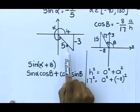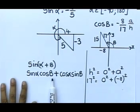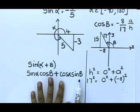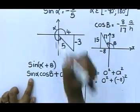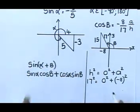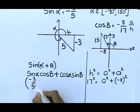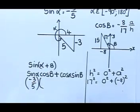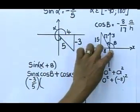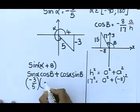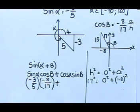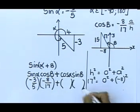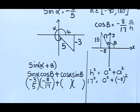Go to the alpha sketch. Sin is opposite over hypotenuse, so sin α = negative 3 over 5. For cos β, go to the second sketch where you have the beta angle. Cos is adjacent over hypotenuse. Now go fill in the cos ratio and the sin ratio for yourselves while I check for questions.